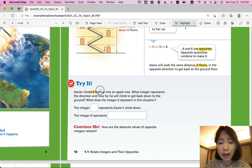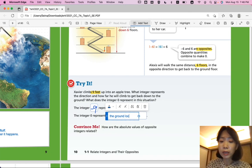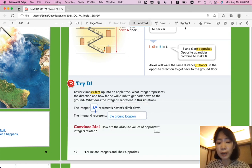He climbs up nine feet. So what integer represents his climb down? He has to go down nine. So it's going to be negative nine. The integer zero here will represent the ground location.